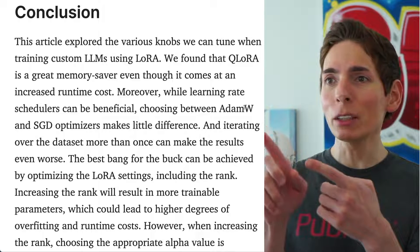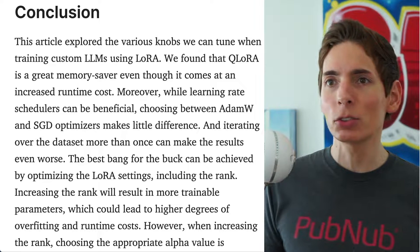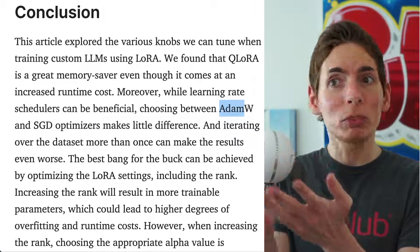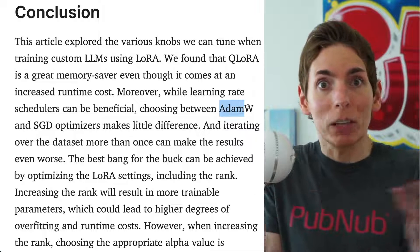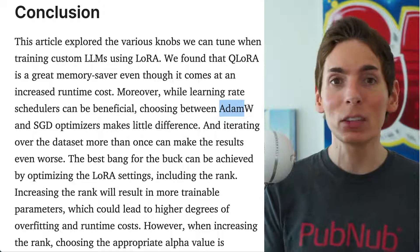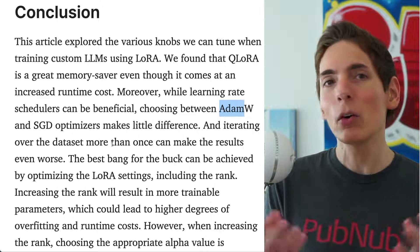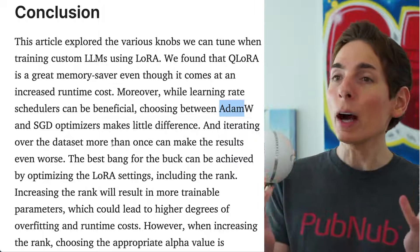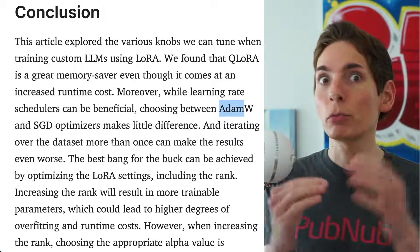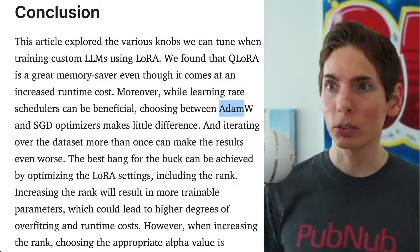Another consideration is choosing a different optimizer — you have stochastic gradient descent (SGD) and the Adam optimizer. Based on the outcomes, Sebastian says it makes little difference. Since there are so many parameters — 7 billion — the difference between optimizers isn't going to matter much. You'd probably get more benefit from choosing various optimizers when you have far fewer parameters, like in the tens of thousands rather than billions.